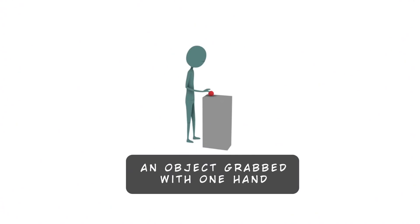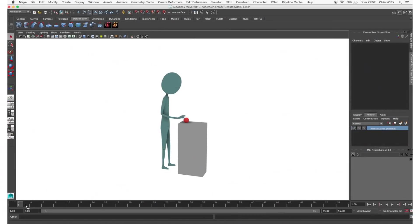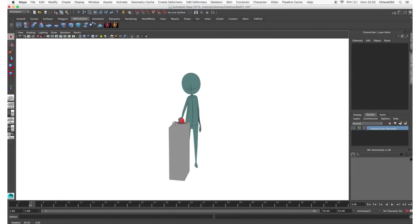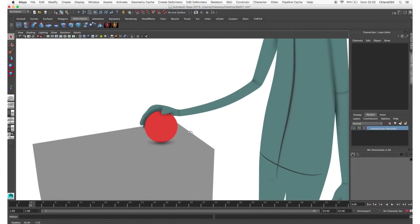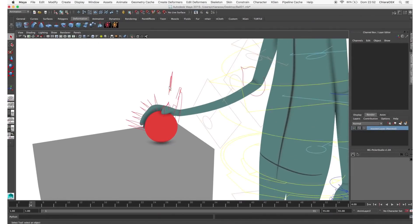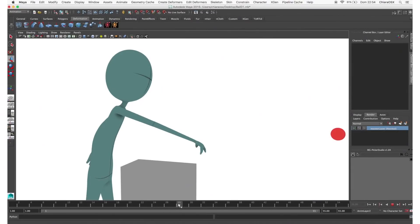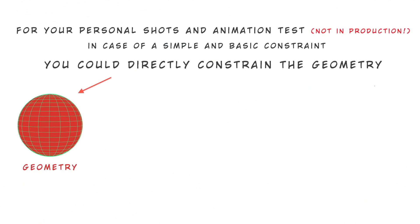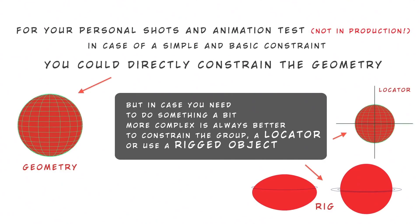Another situation: an object grabbed with a hand, like this ball. He takes it with one hand — you can use IK or FK for the hand, it doesn't matter — and then he throws it. So the ball is driven by the character but at one point it moves independently. In this simple example you could just constrain the ball geometry. It's not necessary to have a locator or a rig for the ball because the animation is pretty easy. But if you have to do more complex sections with the ball, I suggest using a locator or a rigged ball so you could also have squash and stretch.